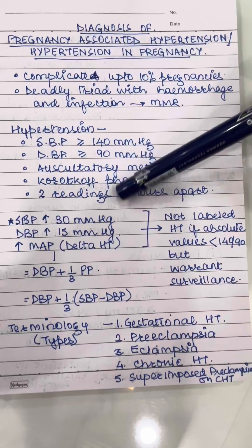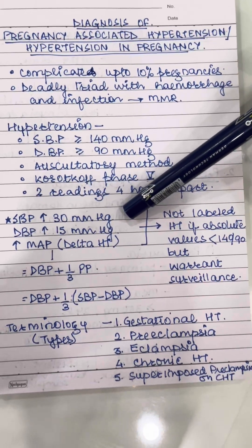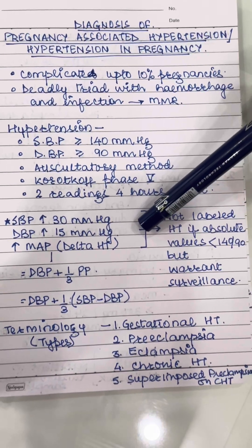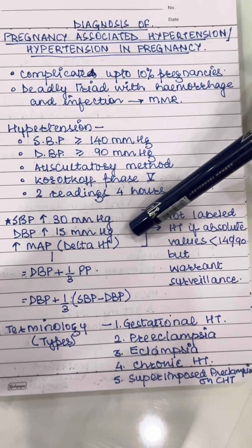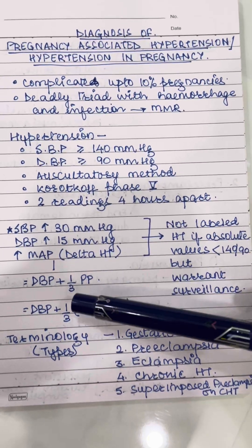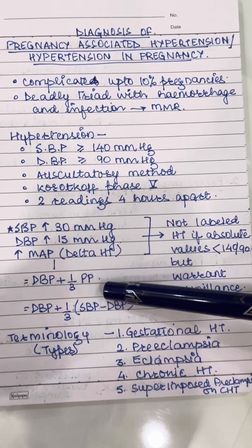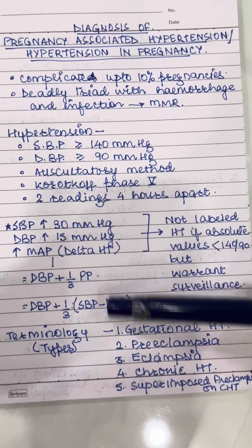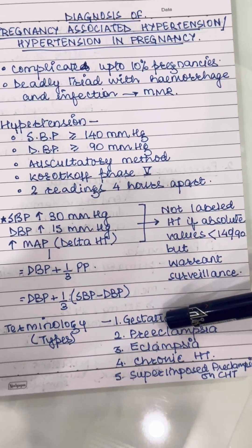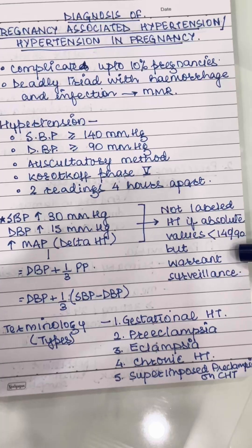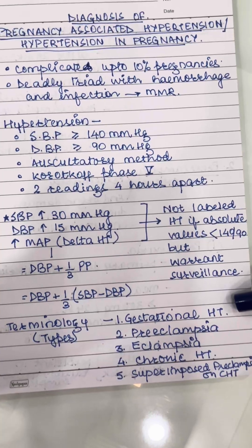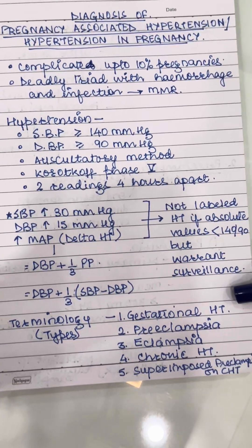Besides this, a rise in systolic BP of more than 30 mmHg, a diastolic BP rise of more than 15 mmHg, or a significant rise in mean arterial pressure — also called delta hypertension — also warrants attention. Mean arterial pressure is calculated as diastolic BP plus one-third of pulse pressure, where pulse pressure is systolic BP minus diastolic BP. If any of these are present, even when the value is not more than 140/90 mmHg, it warrants surveillance of the patient.